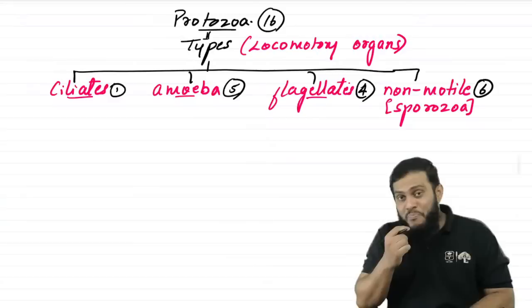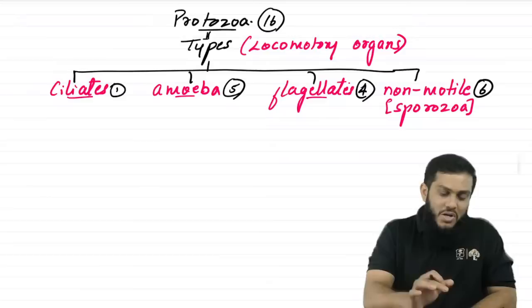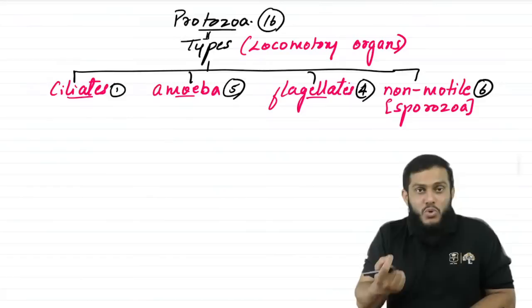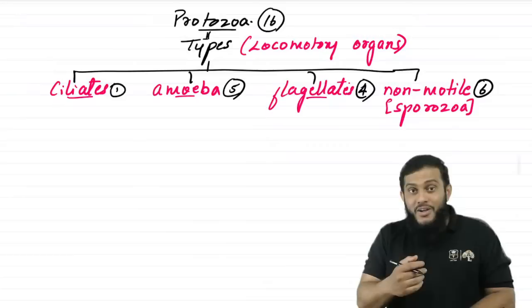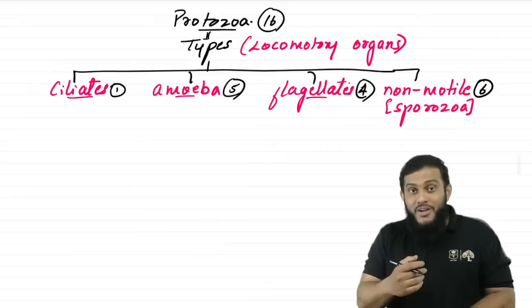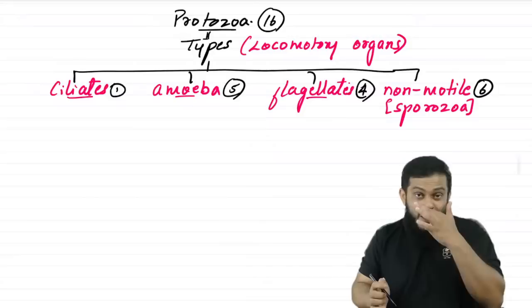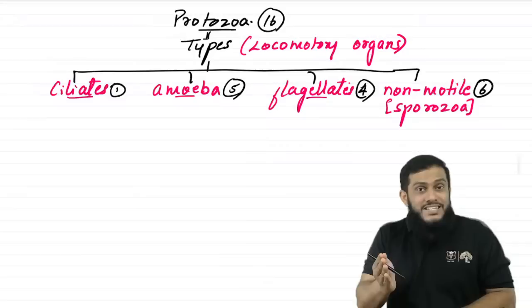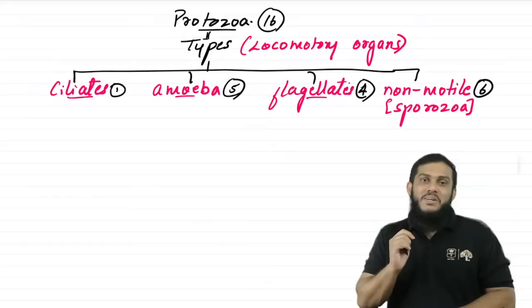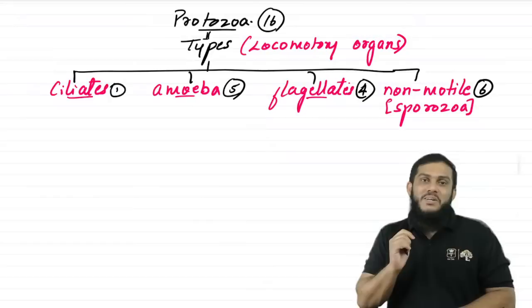Before listing the 16 protozoa, we need to know their habitat — the place where they are present, where they develop, where the life cycle happens, where they cause disease. Everything about the parasite happens in the habitat. If you know the habitat, you know the disease, because the organism causes disease at the site of the habitat.